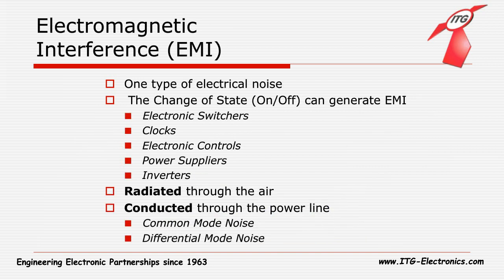Now we'll talk about EMI. EMI flows under the category of electrical noise. A basic change of state, such as on or off, in an electronic component has the potential to generate EMI. Typical examples include electronic switch clocks, electronic controls, power supplies, inverters, fluorescent lights, and motor drives, et cetera.